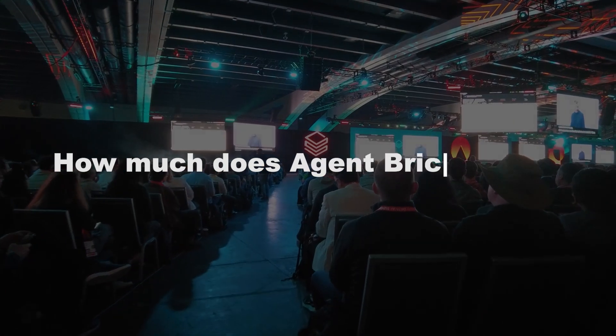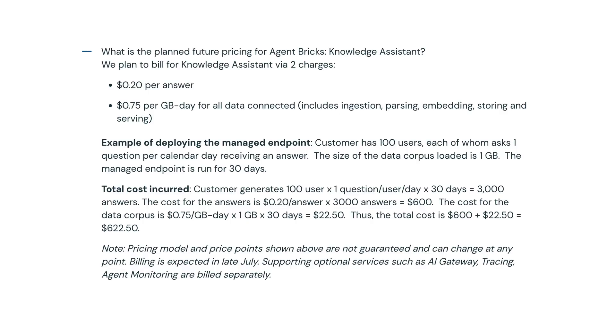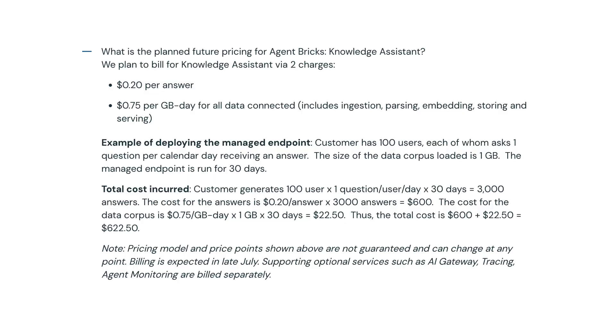Let's talk about cost — we need to be real about these numbers because these agents aren't free, and they're priced for enterprise use. Based on Databricks' own beta pricing, you're looking at $0.20 per answer plus $0.75 per gigabyte per day for the data you connect. For my quick experiment, it cost me $12, so you can test it out without breaking the bank. Let's say you have 10 employees, each asking 10 questions per day — over a month, that's 3,000 answers. At $0.20 each, that's $600 per month. With 1 gigabyte of data, that's $22.50 for hosting, so your monthly cost would be around $623.